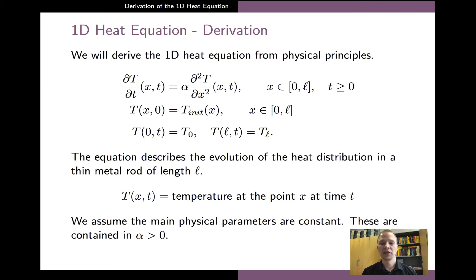For simplicity, we assume that the physical parameters of the metal rod are both independent of time and of the spatial coordinate x. And all of these parameters are collected into a single constant alpha.